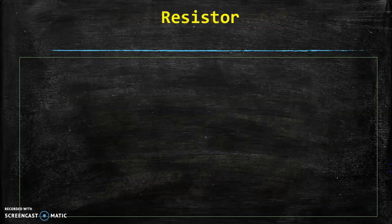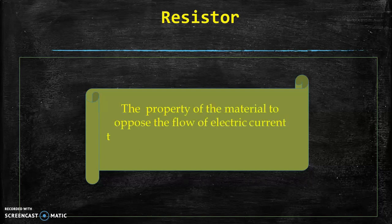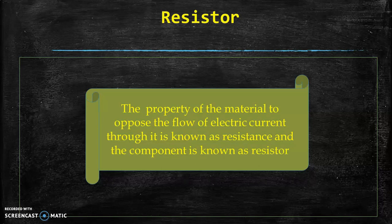Let us start with the resistor. The property of the material to oppose the flow of electric current through it is known as resistance, and the component is known as a resistor. When current passes through any material, it passes in the form of electrons and these electrons collide with the atoms of the material, and this produces a hurdle in the flow of electrons. So this property of any conductor to oppose the electric current is known as resistance, and the component is known as a resistor.